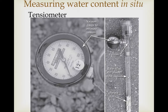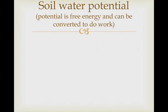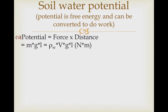Before we dive into the details of how we figure out soil water potential and how we use it to tell us which way the water is moving, I wanted to step back for a minute and carefully define potential. Potential is free energy, and free energy is energy that can be converted to do work. So soil water potential is telling us about the energy available in the soil water that can do work of moving that water from one place to another. Work is always force times distance, therefore potential is force times distance.